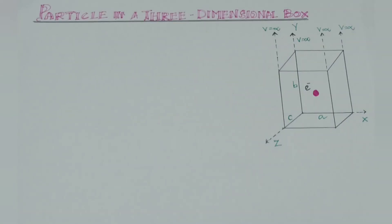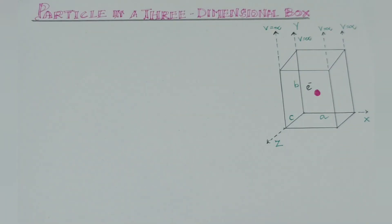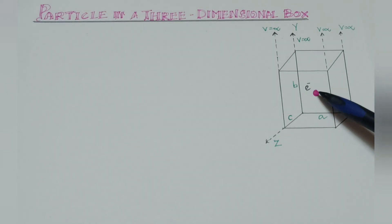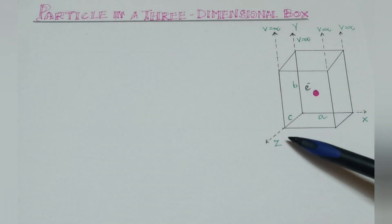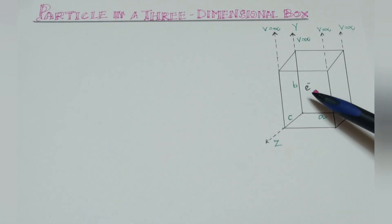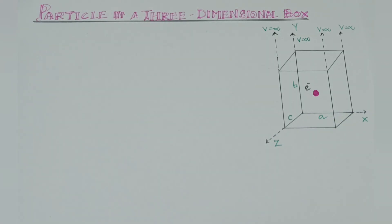This is the quantum number N. The electron moves in all 3 dimensions. Each direction has its own quantum number: nx, ny, and nz. So the electron moves in 3 directions — this is the electron's motion.